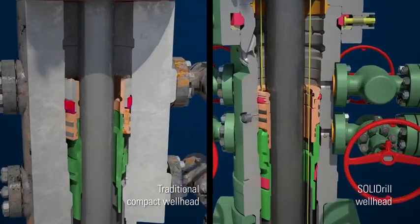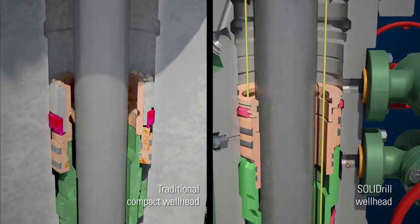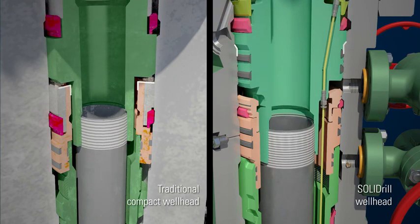The Solid Drill wellhead's casing and tubing hangers are installed on their own dedicated landing shoulder. The wellhead is designed with angled shoulders to repel dirt, metal shards and other debris.